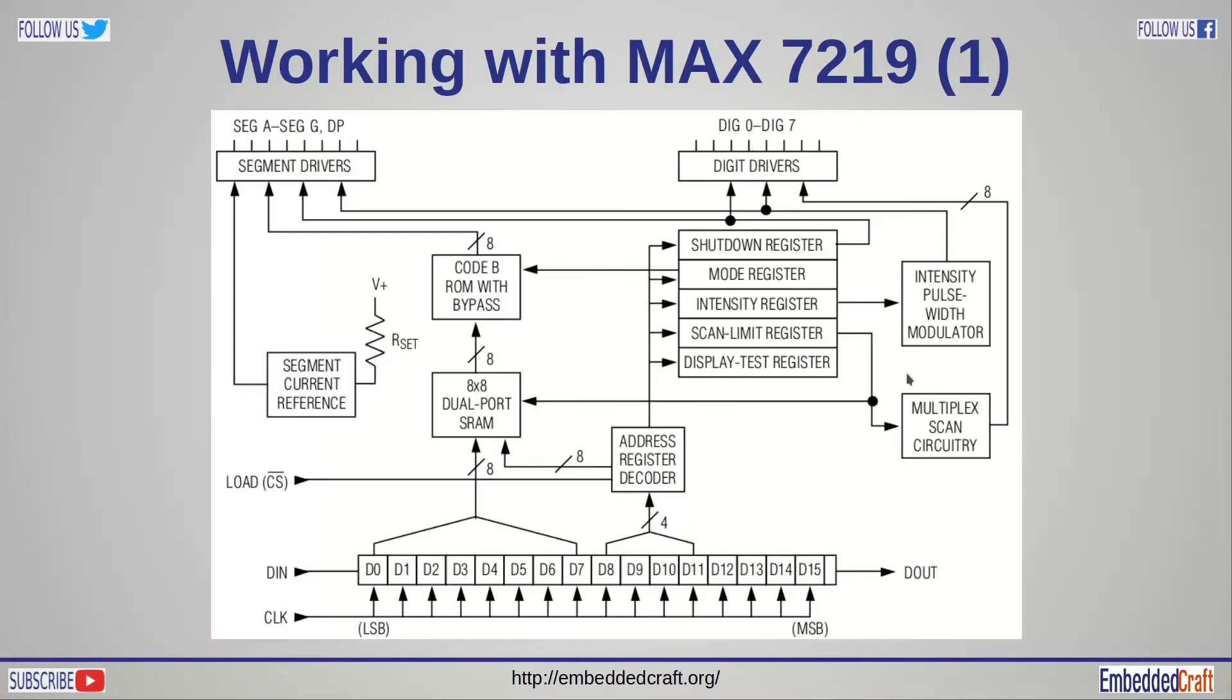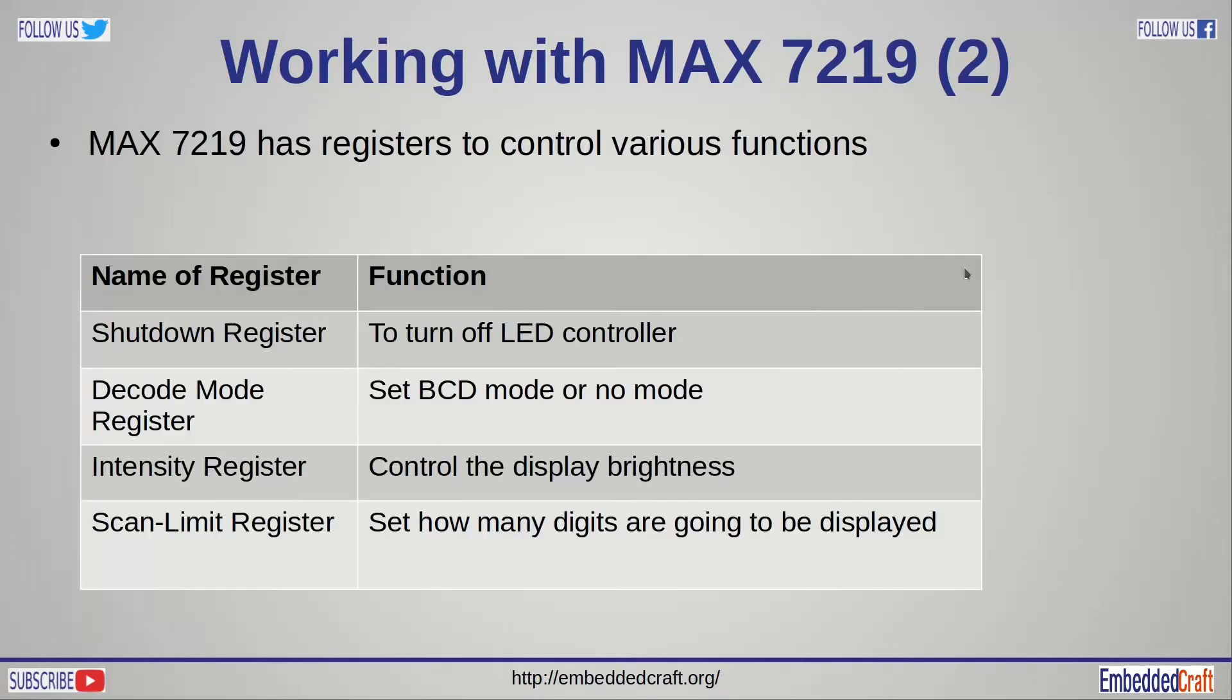Max 7219 has various registers. These are the segment drivers pins SEG A to SEG G and DP line. Here we have digit drivers, it has DIG 0 to DIG 7 lines. It has registers to control functionality of LED drivers. For example, shutdown register to turn LED driver on or off. Same way we have intensity control registers. Scan limit register decide how many digits are going to be displayed.